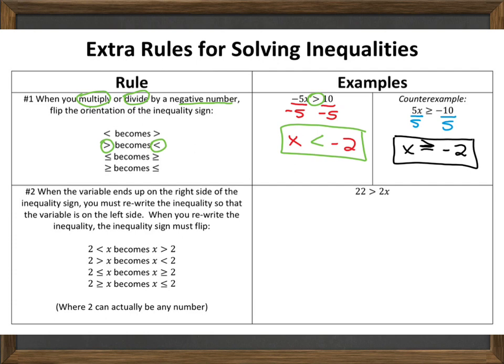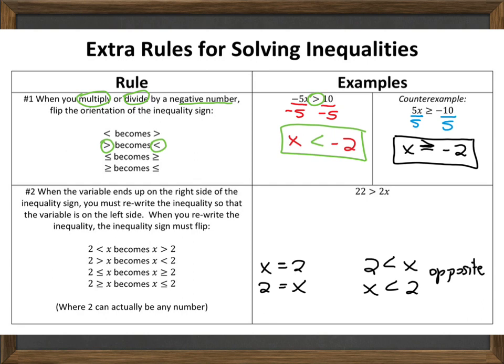Let's look at the next rule. This addresses what happens if the variable ends up on the right-hand side of the inequality. In an equation, x equals 2 and 2 equals x are the same thing. However, if I say 2 is less than x, versus x is less than 2, these are actually not the same — they are opposite. For example, if I said I am older than you, versus you are older than me, those don't mean the same thing. If I am older than you, that means you are younger than me. So since these have opposite meanings, we have to switch them and be very careful with our inequality signs.